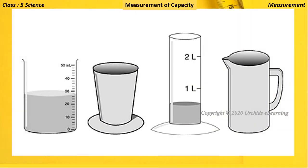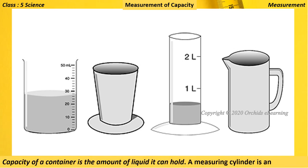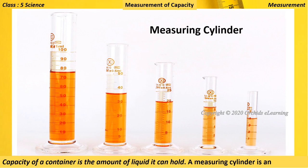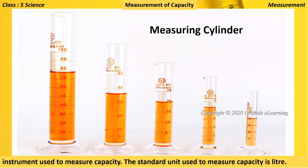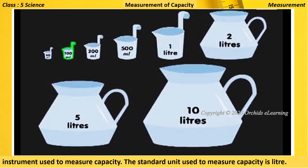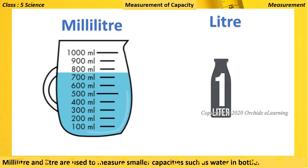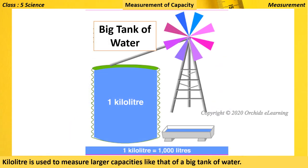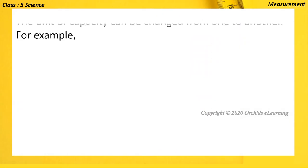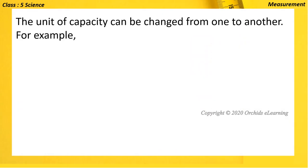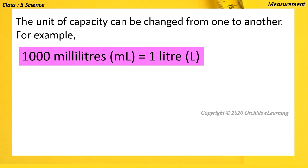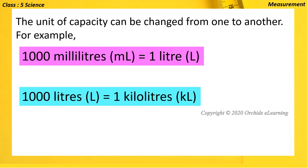Measurement of capacity: the capacity of a container is the amount of liquid it can hold. A measuring cylinder is an instrument used to measure capacity. The standard unit used to measure capacity is the liter. Milliliter and liter are used to measure smaller capacities, such as water in bottles. Kiloliter is used to measure larger capacities, like that of a big tank of water. The units of capacity can be converted: 1000 milliliters equals 1 liter, and 1000 liters equals 1 kiloliter.